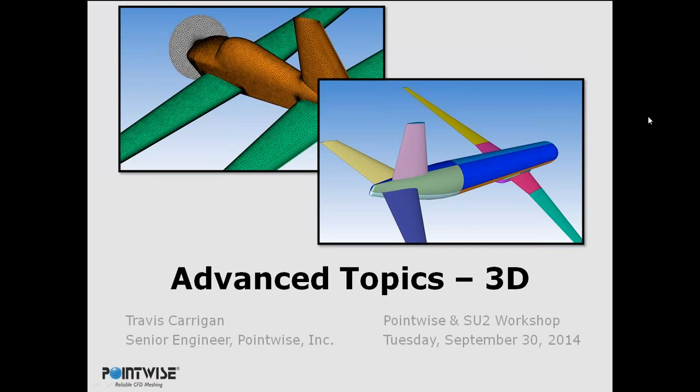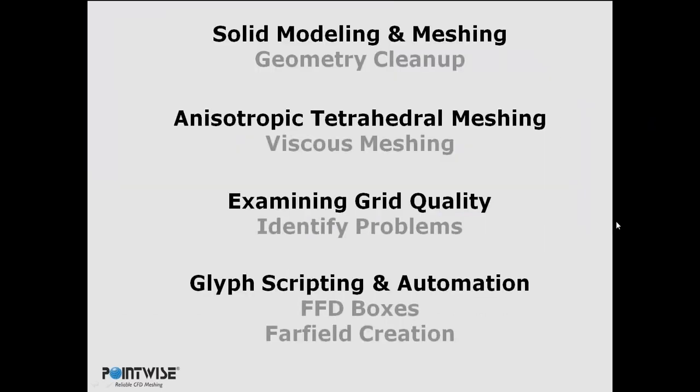The first thing I'm going to cover is solid modeling and meshing, which is basically geometry cleanup. It's very rare that geometry comes in clean, so I'll discuss techniques in PointWise for cleaning it up. Then I'll launch into viscous meshing — anisotropic tetrahedral meshing specifically — an algorithm in PointWise for creating hybrid viscous meshes. After that, grid quality: how to identify problems, what they mean for your solver, and the different metrics we can look at. And if I have time at the end, I'll wrap up with glyph scripting and automation, specifically the script for creating FFD boxes for SU2 and a couple of other utility scripts.